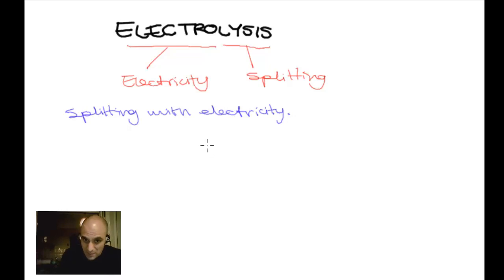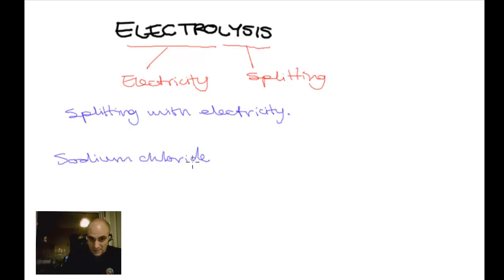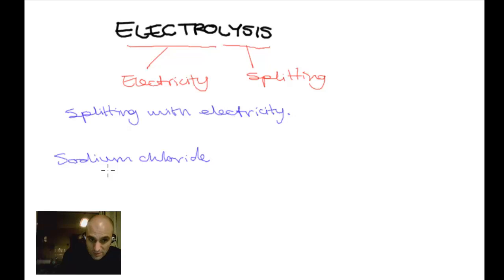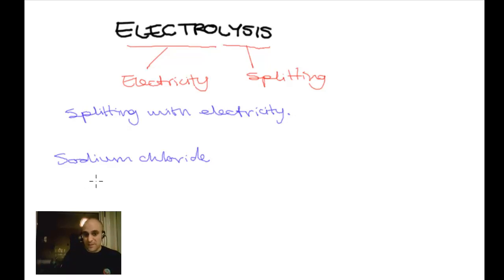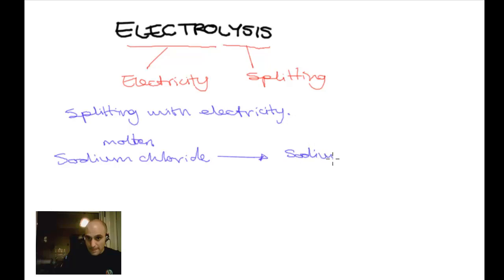Why does it mean splitting with electricity? If you take molten sodium chloride — sodium chloride being an ionic compound is made of ions. In its solid form, solid sodium chloride can't conduct electricity because the ions are not free to move. But if you take liquid or molten sodium chloride, it does conduct electricity, and it is simplified into its constituent elements: sodium and chlorine.